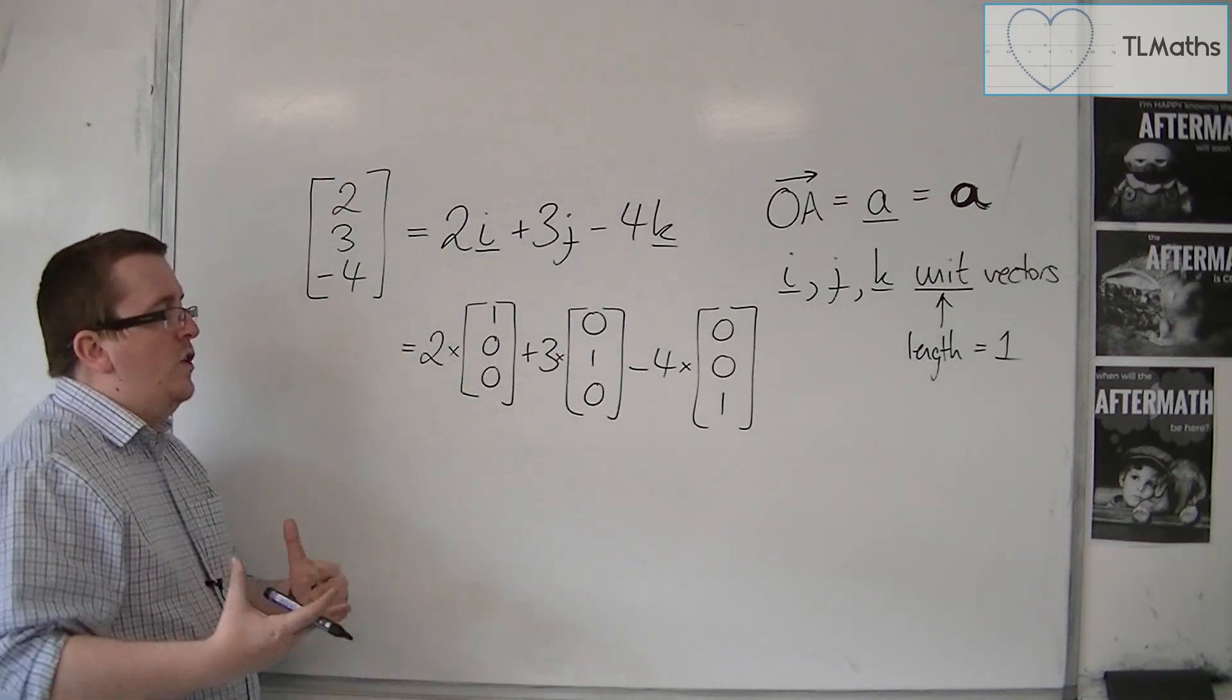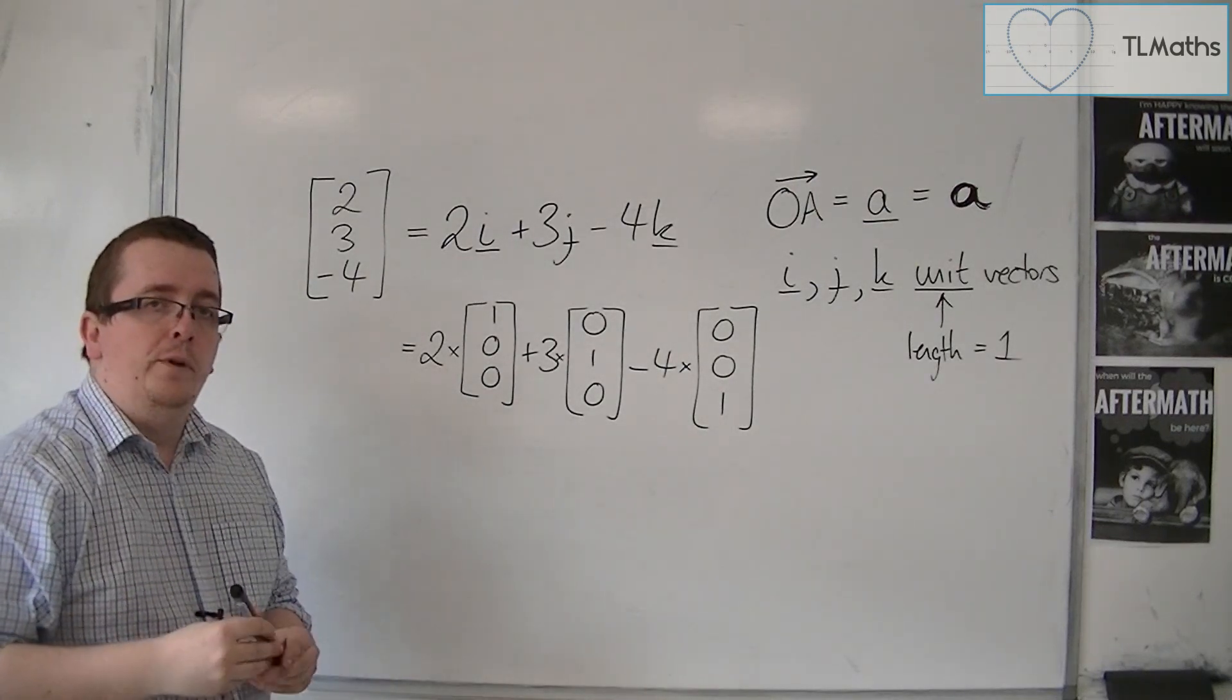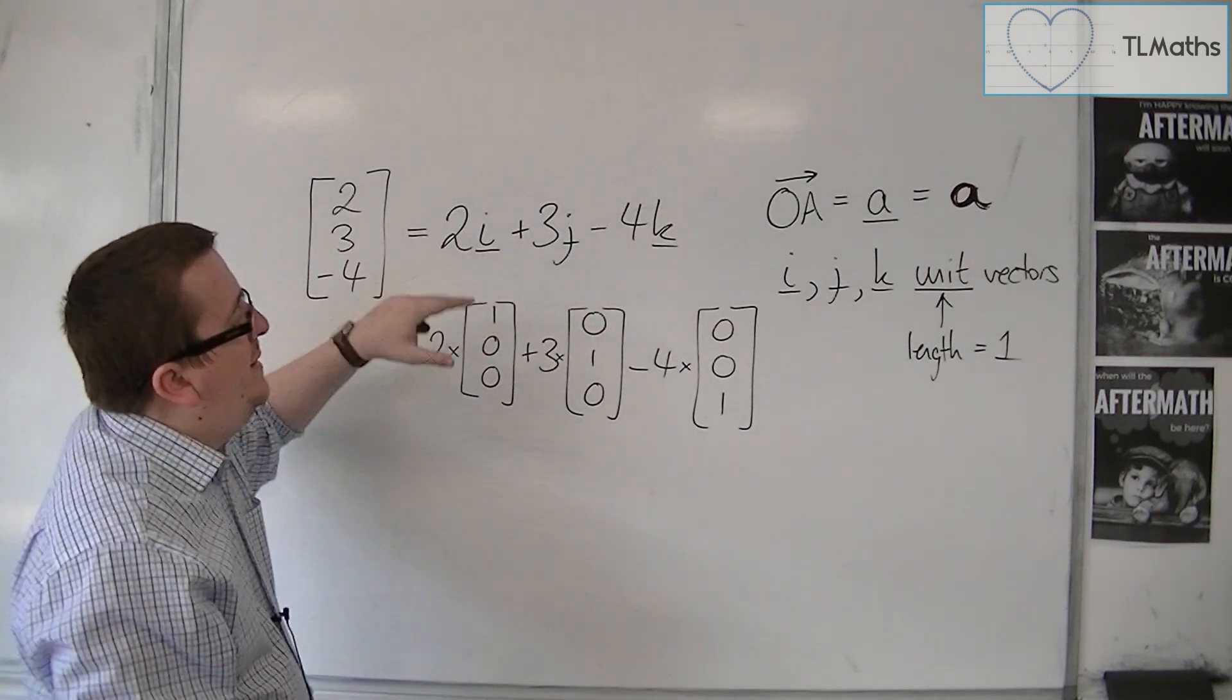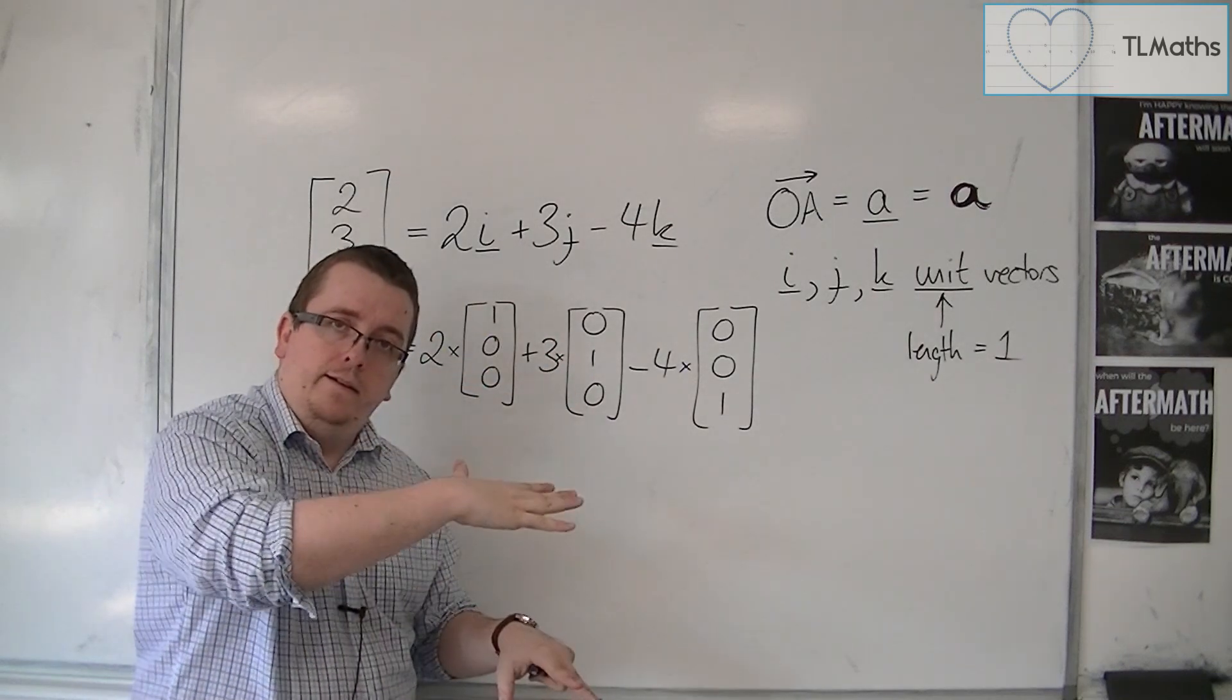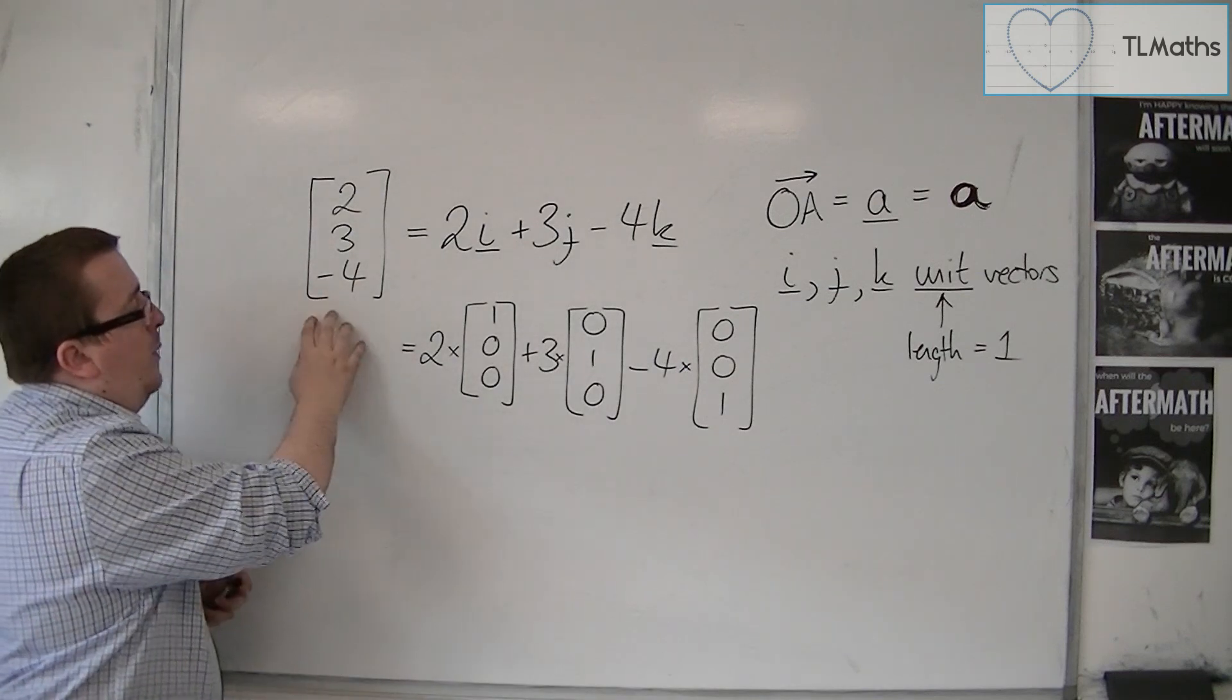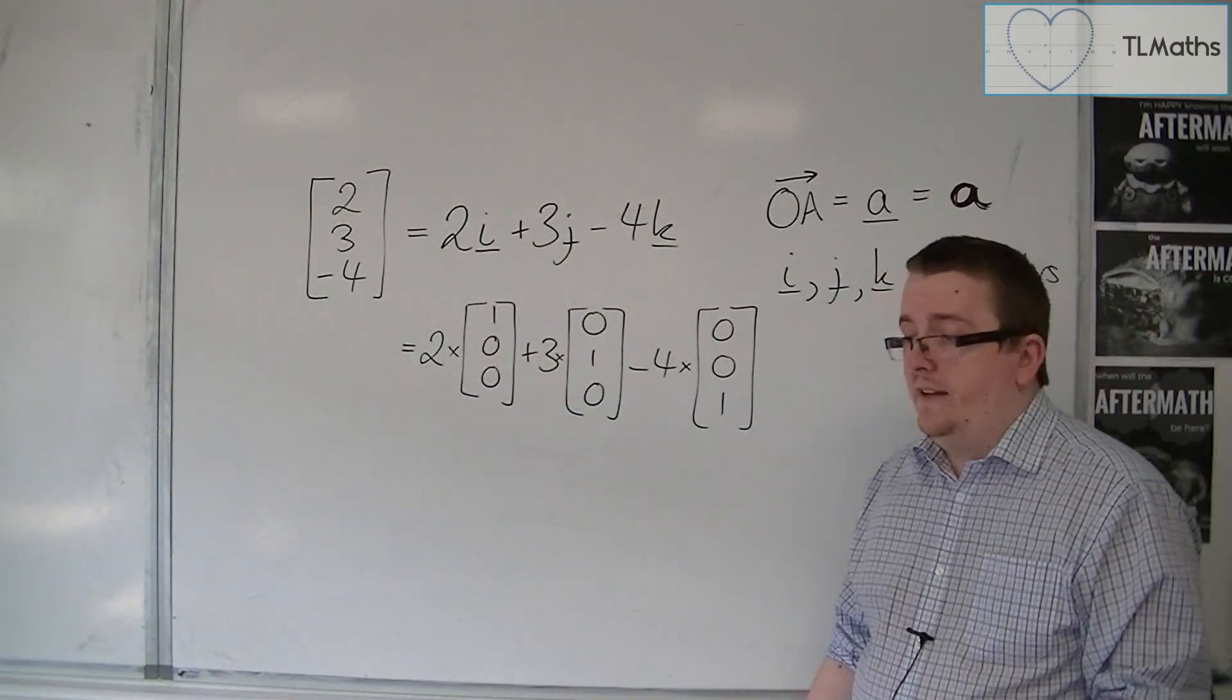Depending on the question, you could be given a vector in this component form, or you could be given it in vector form. Now when it's in the body of a text, usually you would use this because it doesn't kind of take up as much space on the line. So it makes sense that you would use that format if you were writing like a whole paragraph of text. But if you had some space, then you would probably write it like that.